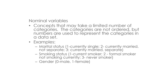Nominal variables represent concepts with a limited number of categories where the categories are not ordered, but numbers are used to represent the categories in a dataset. Examples include marital status — using 1 for currently single, 2 for currently married not separated, and 3 for currently married but separated — smoking status, using 1 for current smoker, 2 for former smoker not currently smoking, and 3 for never smoker, and gender, where 0 represents male and 1 represents female.